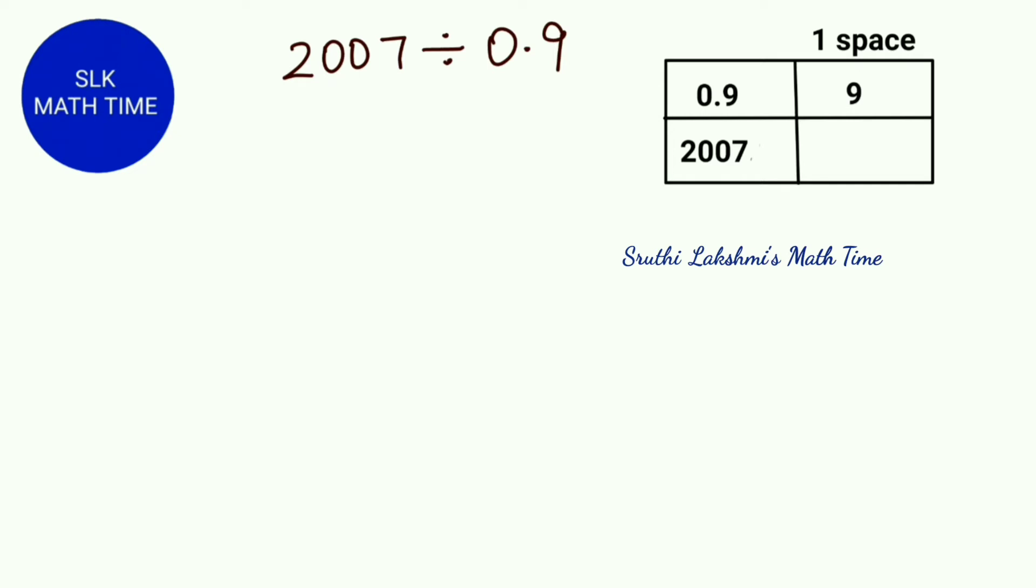So that means we also have to move one space in 2007. Remember that all whole numbers have an invisible decimal point and a zero. People just don't write the decimal point and the zero, but every number has a decimal point, at least at the end.